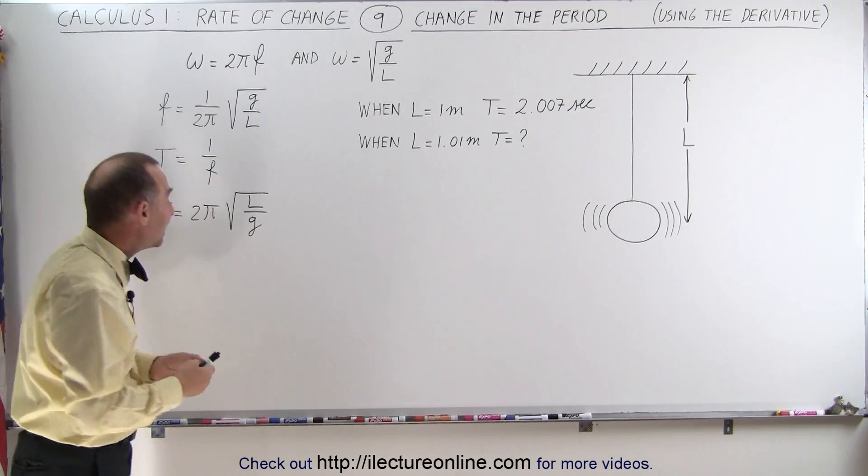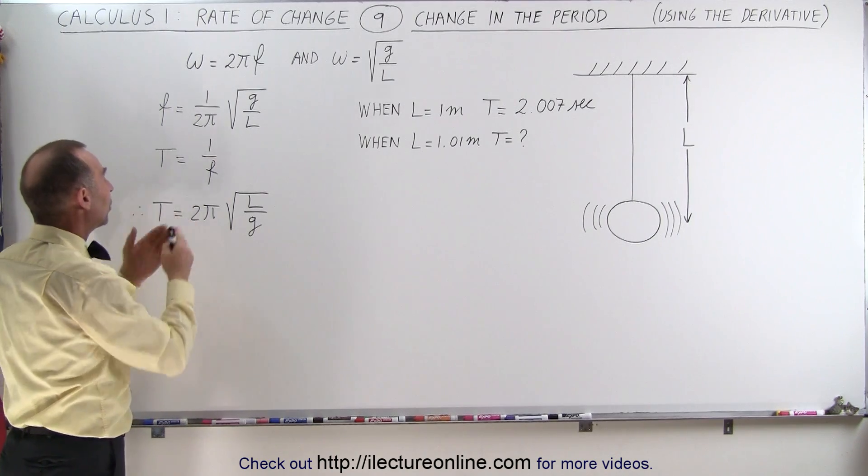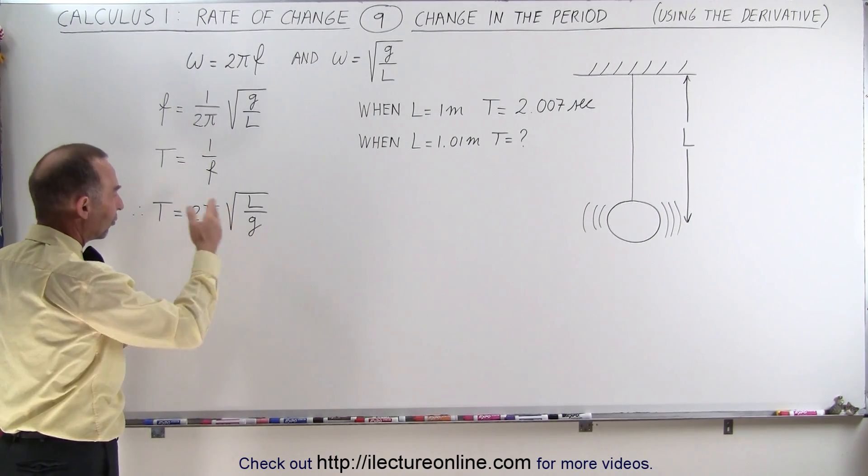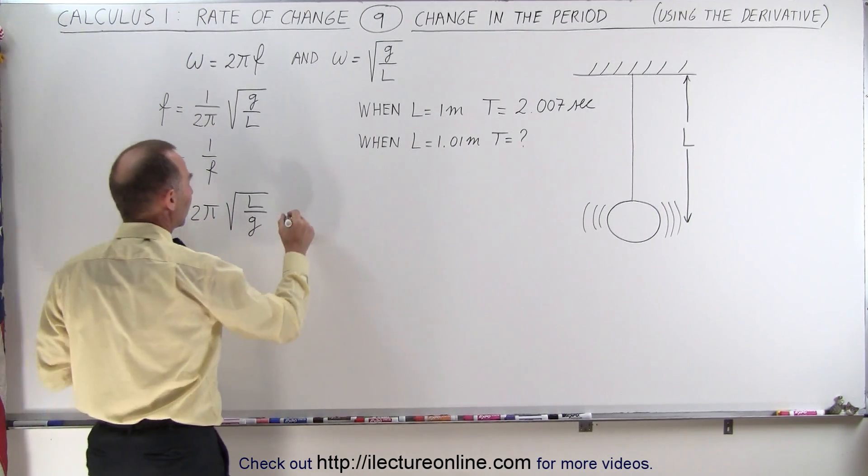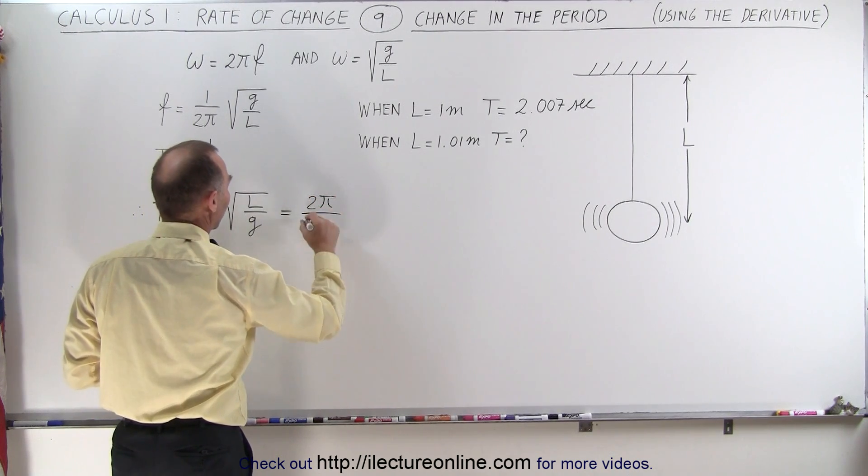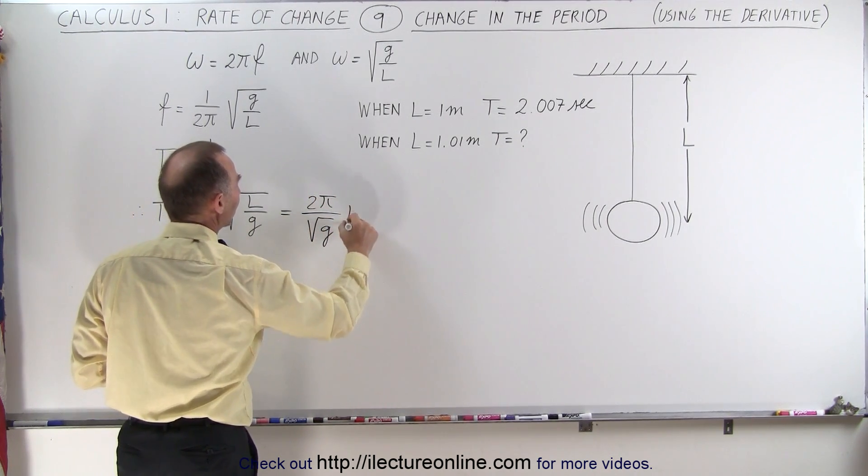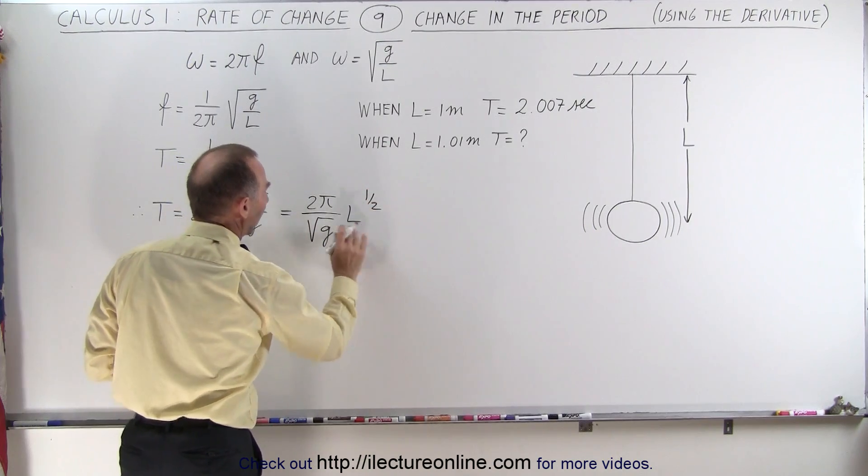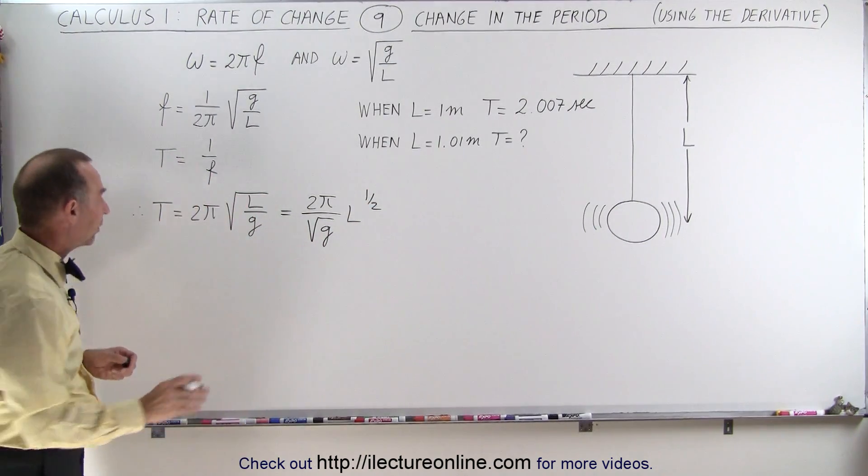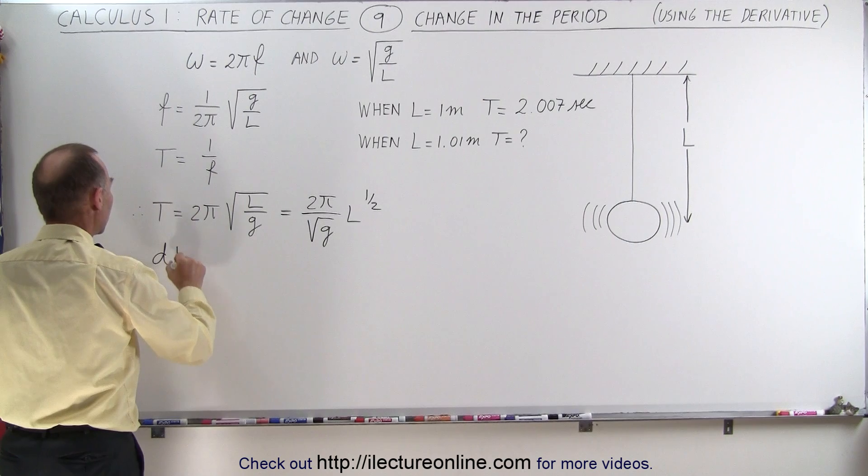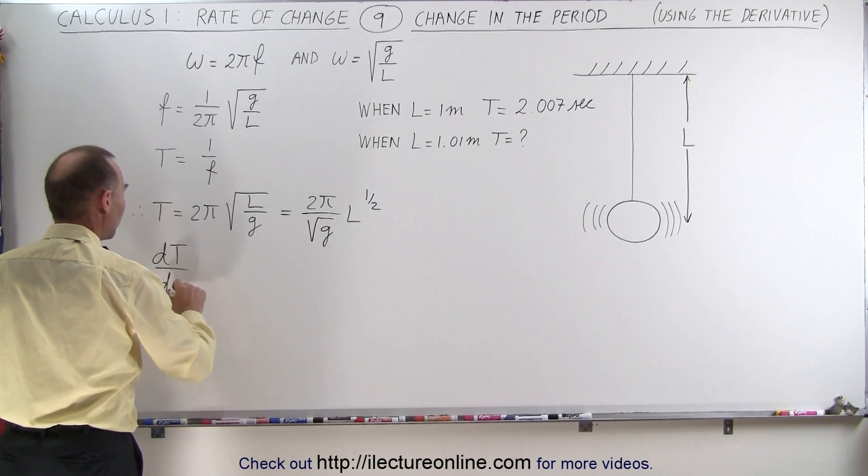So let's rewrite this equation. We can say that this is equal to 2π divided by the square root of g times L to the 1/2 power. L is our variable here. So now we can find the change in the period with respect to the length.